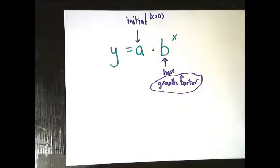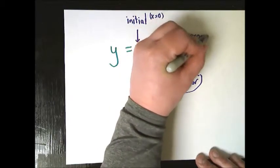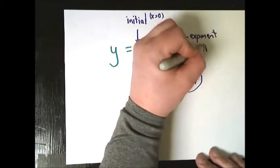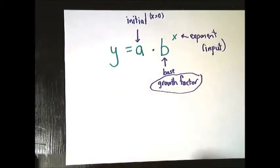And then finally, you have your x value, which is your input value, or in some cases your exponent. Whatever your input is, how long, how many times you're doing it. A lot of real world or word problem scenarios will say it happens for this many years. Well, that's what that means. Let's do three of them and then be done with it.